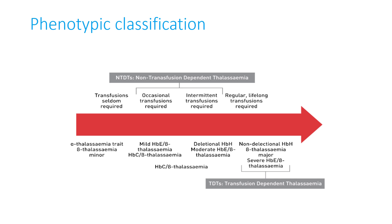There is a phenotypic classification based on clinical severity and transfusion requirement. If transfusions are occasional or intermittent, it is referred to as non-transfusion dependent thalassemia (NTDT), and the types included are mild HbE beta thalassemia, HbC beta thalassemia, and deletional HbH and moderate HbE beta thalassemia. If the transfusion requirement is regular or lifelong, the phenotype is referred to as transfusion dependent thalassemia (TDT), which includes non-deletional HbH, beta thalassemia major, and severe HbE beta thalassemia.